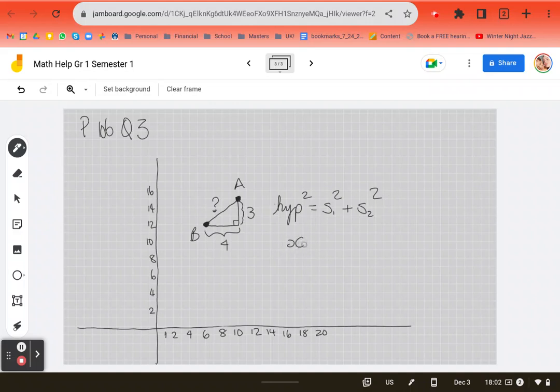Hypotenuse, we don't know what that is. Side 1 squared is 3 squared plus side 2 squared is 4 squared. And 9 plus 16 is 25. So x squared is 25. X is the square root of 25, which is equal to 5. Happy face.